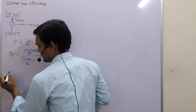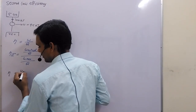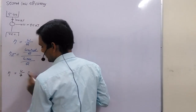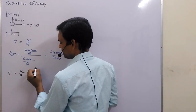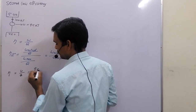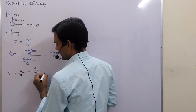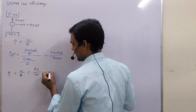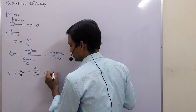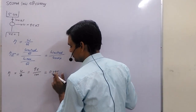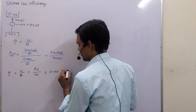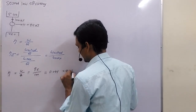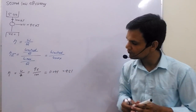If we talk about only efficiency, then the efficiency will be W upon heat supply. We are receiving 9.5 kJ of work and supplying 100 kJ, so the efficiency of this engine will be 0.095, or 9.5%.